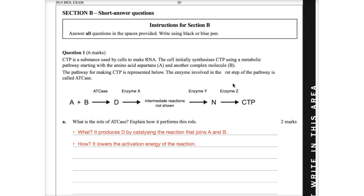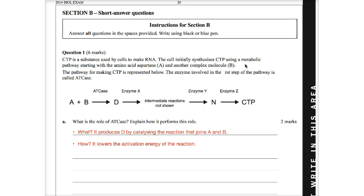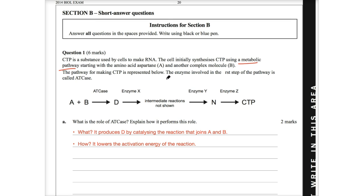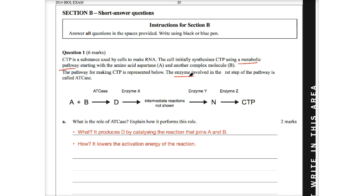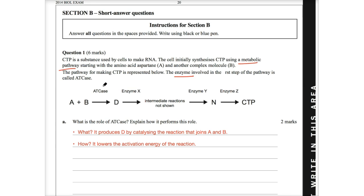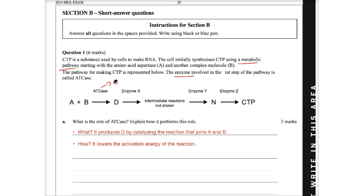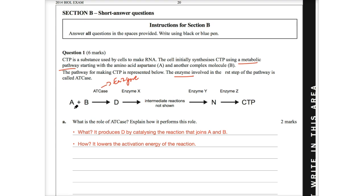Question one looks at this. CTP is a substance used by cells to make RNA. The cell initially synthesizes CTP using a metabolic pathway starting with the amino acid aspartame and another complex molecule B. The pathway for making CTP is represented below. The enzyme involved in the first step of the pathway is ATCase. And therefore, this is our enzyme. Now, rolling through it, I just want to get a brief overview of what the process is. We clearly see A and B join. They produce D, but enzyme here, ATCase, catalyzes that. Enzyme X then pushes D to go to an intermediate, which they haven't shown, which then goes enzyme Y to N and enzyme Z to CTP. So it's an enzymatic pathway with different products and substrates throughout.